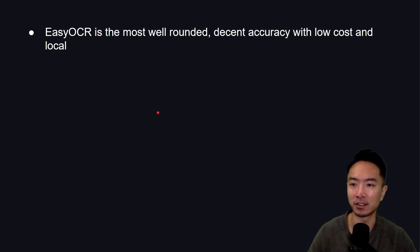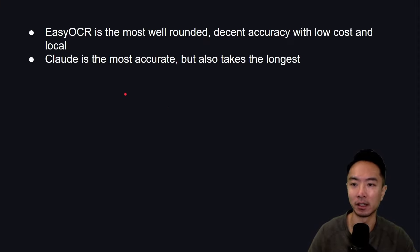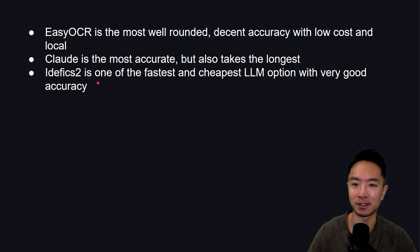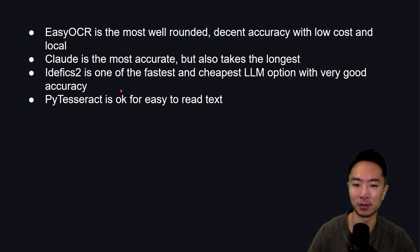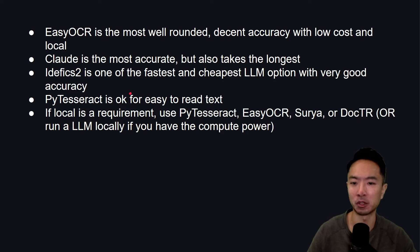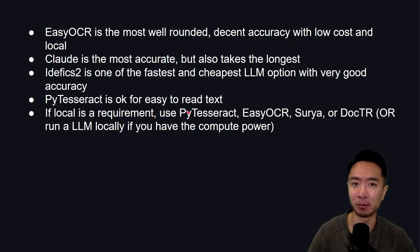Here's my general recommendation. Easy OCR is the most well-rounded — decent accuracy, low cost, and you can run it locally. Claude is probably the most accurate but also takes the longest, so if accuracy across different domains is what you're shooting for, choose Claude. IDFX is one of the fastest and cheapest LLM options with very good accuracy — a nice balance between cost and accuracy. PyTesseract is okay for easy-to-read text but I wouldn't recommend it for everything else. If running locally is a requirement, consider PyTesseract, Easy OCR, Surya, or docTR — or running an LLM locally if you have the compute power.